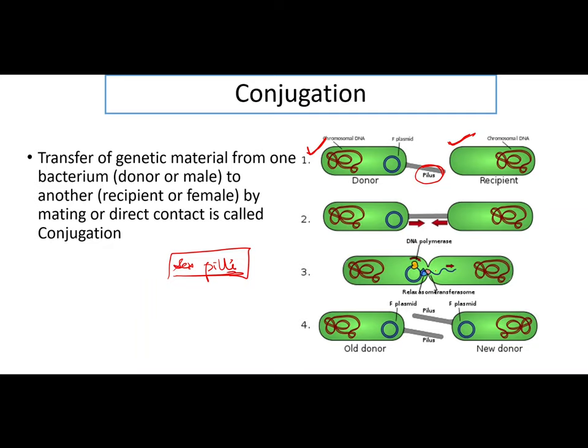Once that bridge forms and your two bacteria come in direct contact, that plasmid will replicate and a copy of it will pass on to your recipient. If you look at the fourth step, the F plasmid is now present in both your donor and the new donor — which earlier was your recipient. Both bacteria now have the F plasmid and they can produce pili and conjugate with a third bacterium which is a recipient.